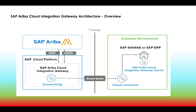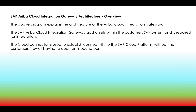This is the architecture of SAP Ariba Cloud Platform. From SAP Cloud Platform, you can connect to any SAP Ariba solutions or Ariba Network. It is a single application through which you can connect all applications with a single gateway. The SAP Ariba Cloud Integration Gateway add-on sits within the customer's SAP system and is required for integration. The cloud connector is used to establish connectivity to the SAP Cloud Platform without the customer's firewall having to open an inbound port.